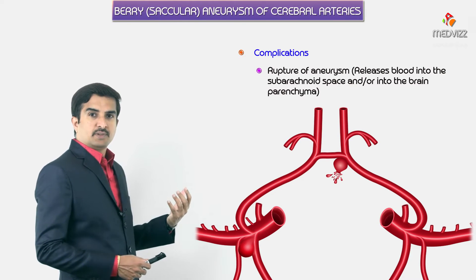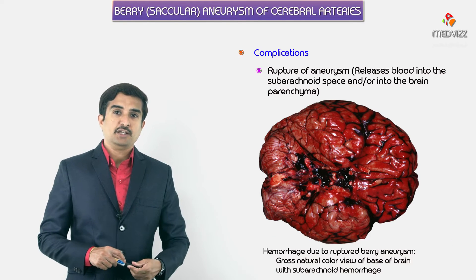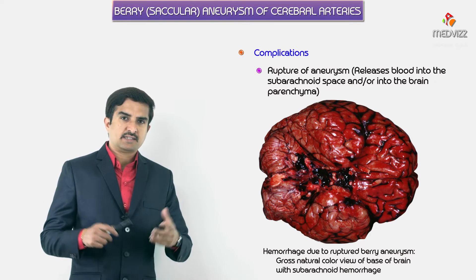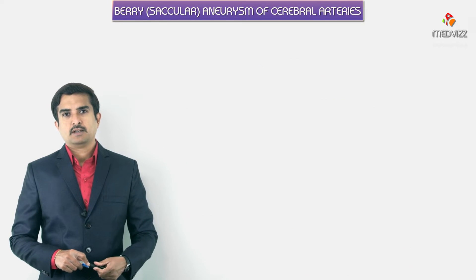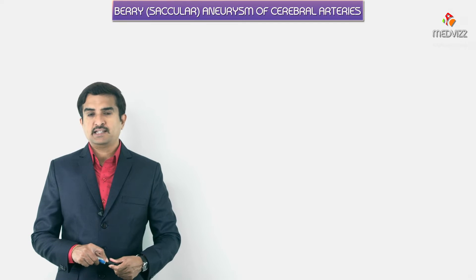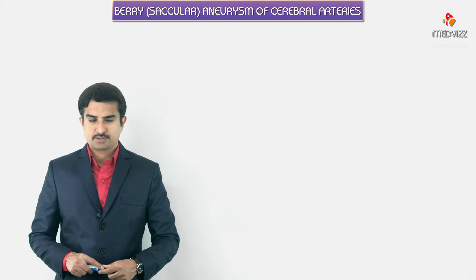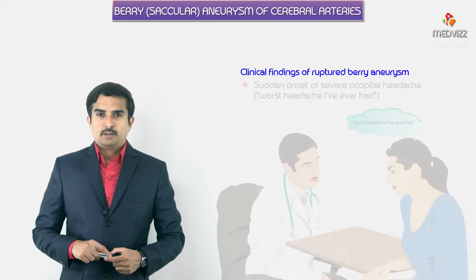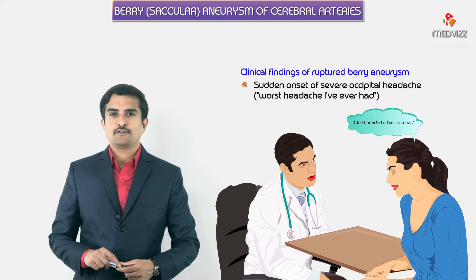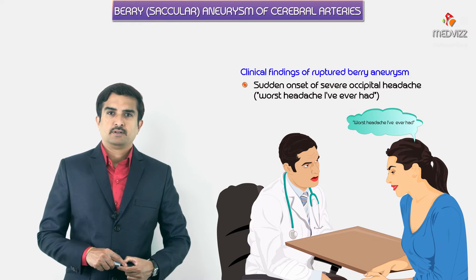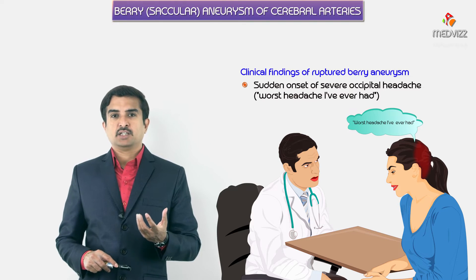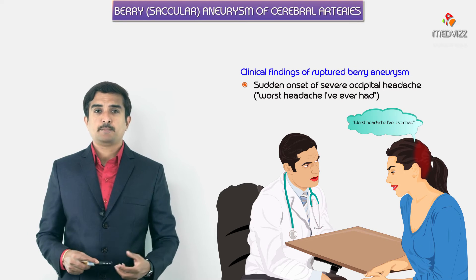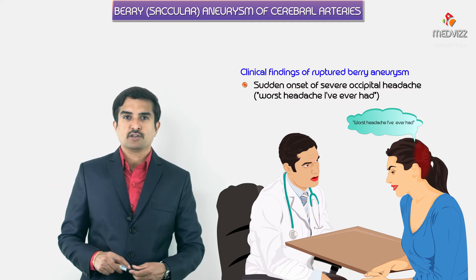When these aneurysms rupture, blood is released into the subarachnoid space or into the brain parenchyma. Until rupture, the vast majority of berry aneurysms are asymptomatic. Clinical manifestations are more commonly seen with ruptured berry aneurysms. Patients often complain of sudden onset of severe occipital headache, best described as the worst headache they have ever had.